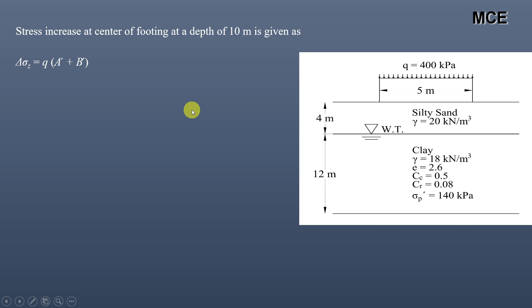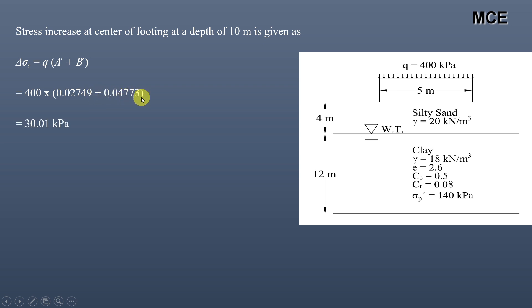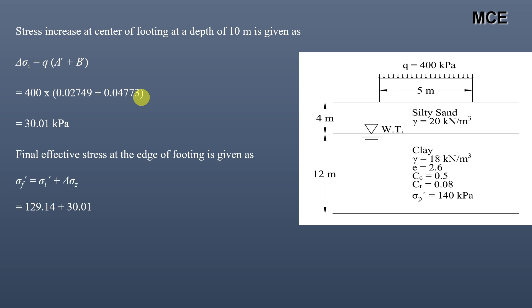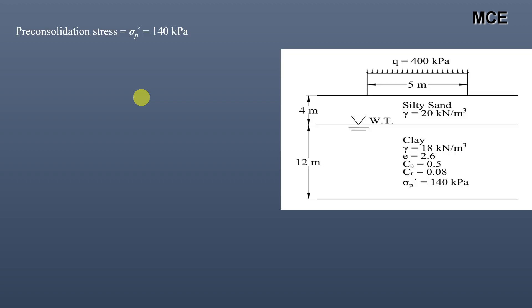The stress increase at the edge of the footing at a depth of 10 meters is: Δσ = q × (A′ + B′) = 400 × (0.02749 + 0.04773) = 30.01 kPa. The final effective stress at the edge is: 129.14 + 30.01 = 159.2 kilo Pascal.